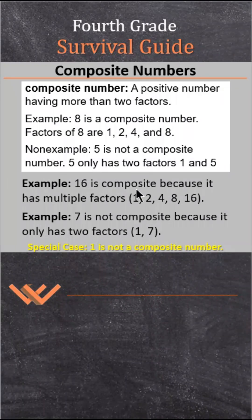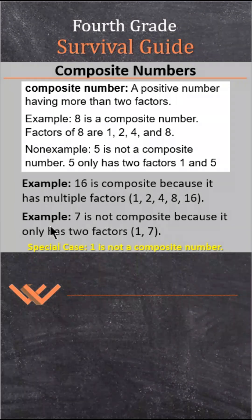Example: 16 is composite because it has multiple factors — 1, 2, 4, 8, and 16. Non-example: 7 is not composite because it only has two factors, 1 and 7.